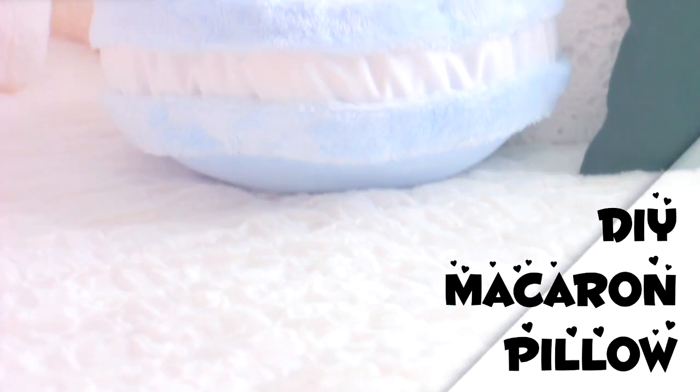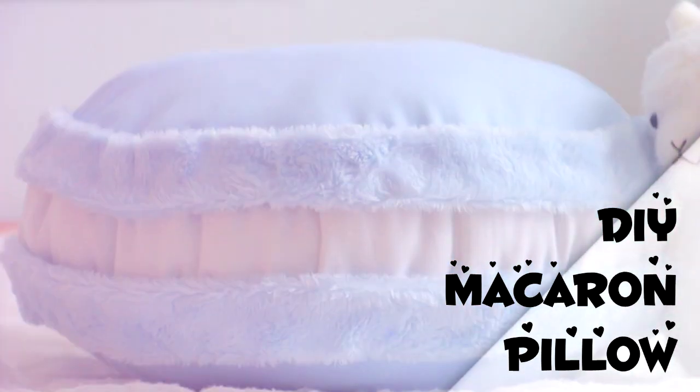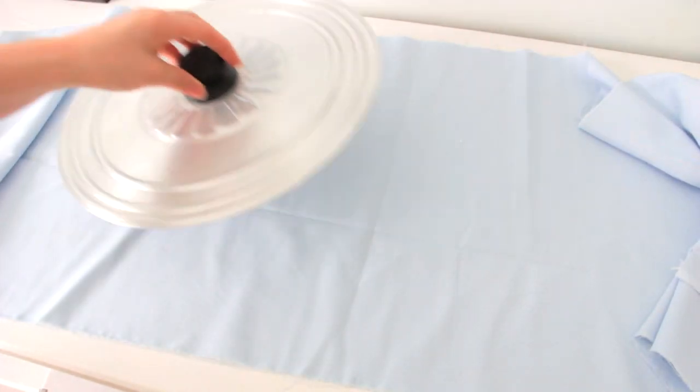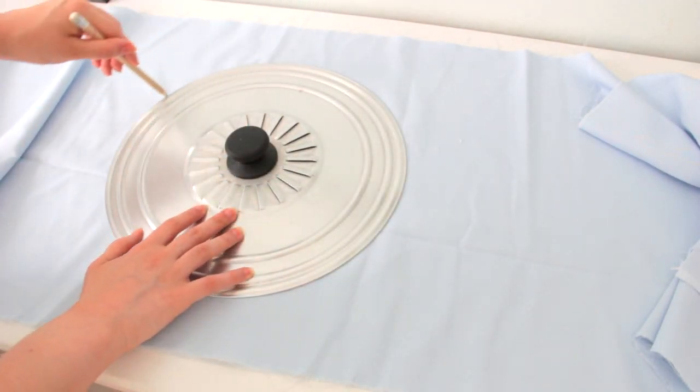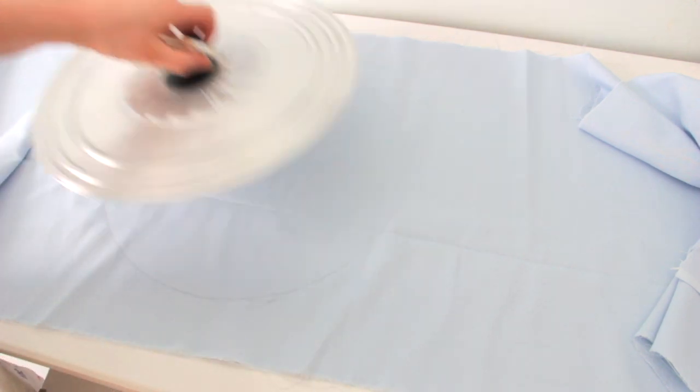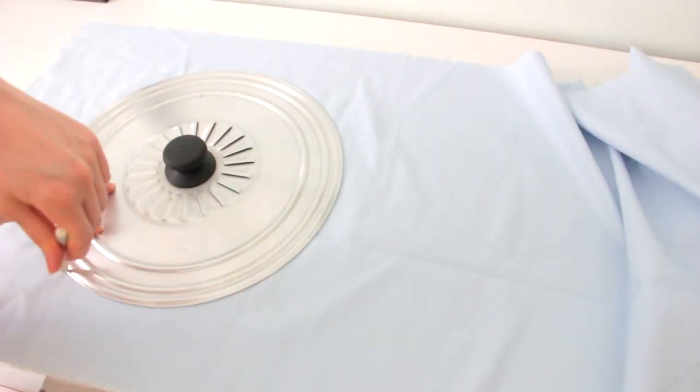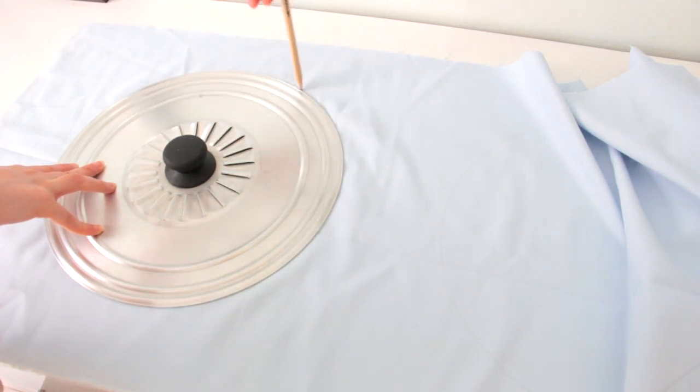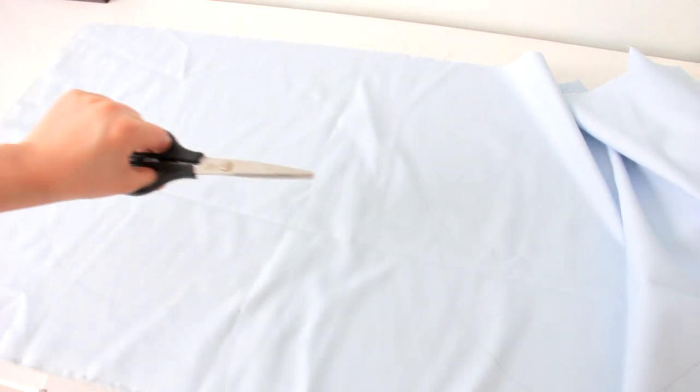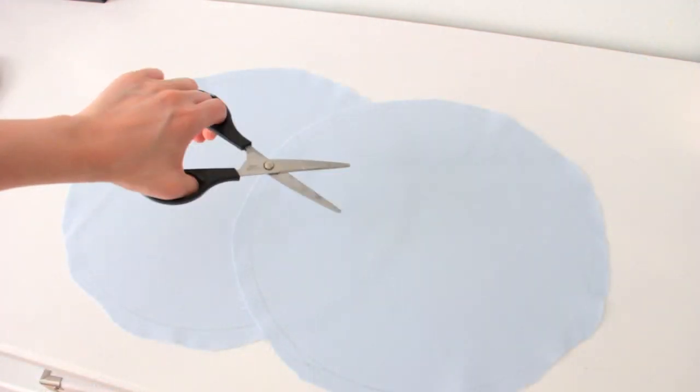Hey guys, I've been requested to make more pillow tutorials, so today I will show you how to make this adorable macaron pillow. For this pillow I used blue fabric, blue furry fabric, and white fabric. Start off with the regular blue fabric and make two big circles on the wrong side of the fabric, then cut them out. Make sure you leave one centimeter of seam allowance.